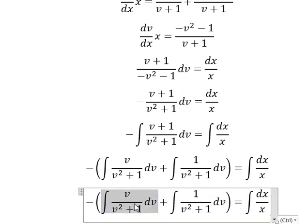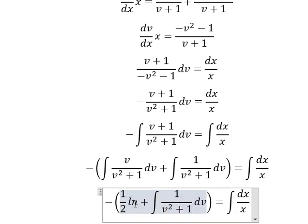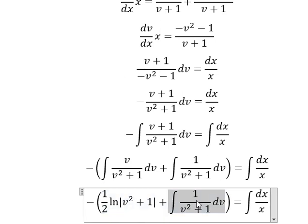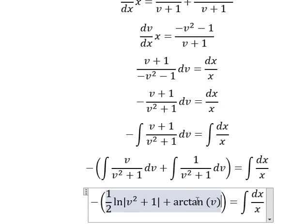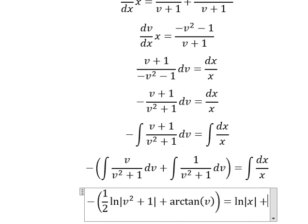This one is about one over two ln of the absolute value of v squared plus one. This one is about arctan of v. The integration of this one we have ln of the absolute value of x and we put c.